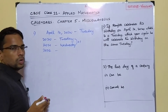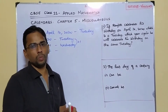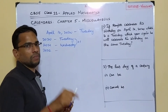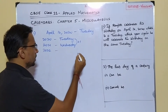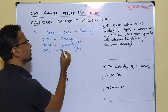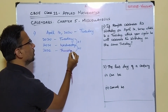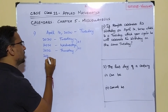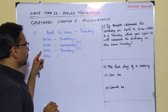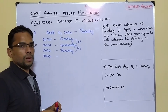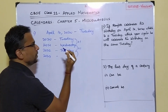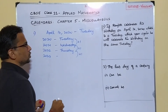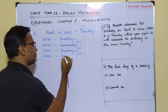Coming to the next year, 2022: traveling from 2021 to 2022 is again 365 days — an ordinary year — so again plus one. Wednesday plus one gives Thursday. Next, 2023: from 2022's April to 2023's April is again an ordinary year, 365 days, so plus one. Thursday plus one gives Friday. In 2023, his birthday is on a Friday.